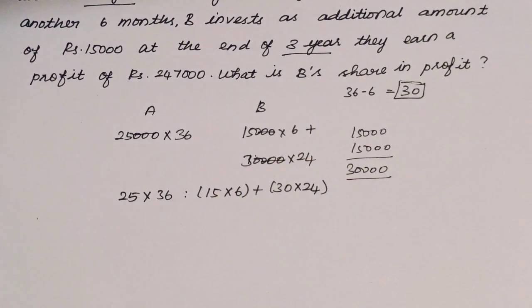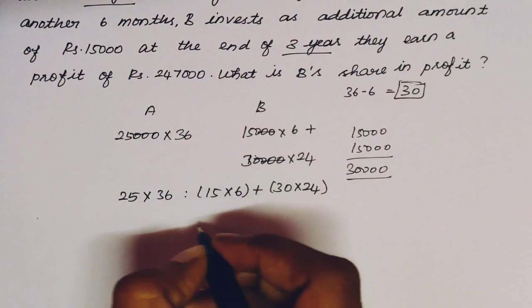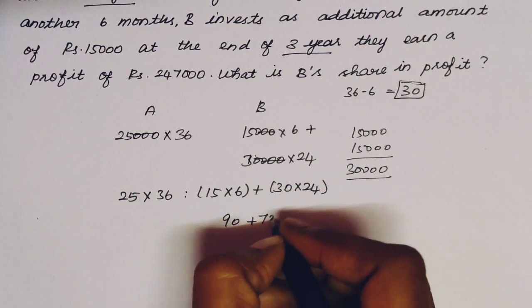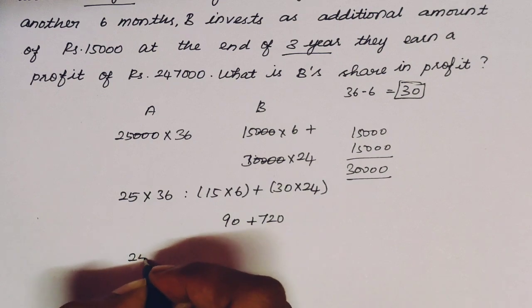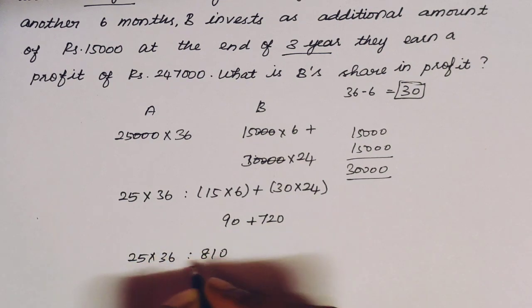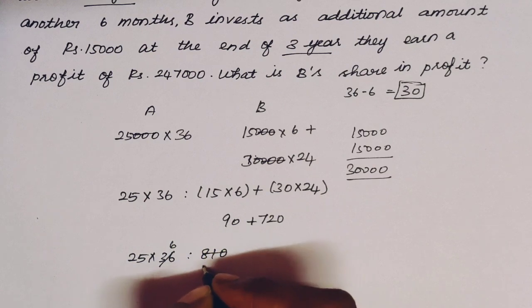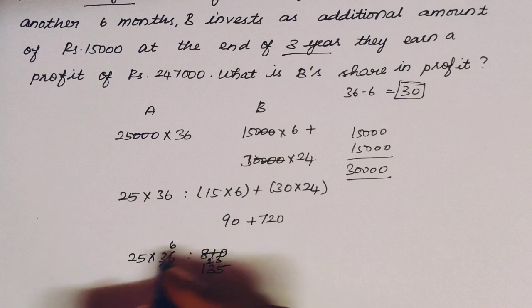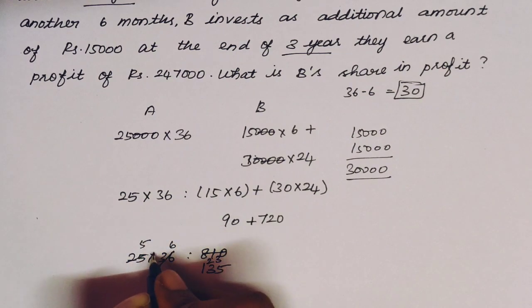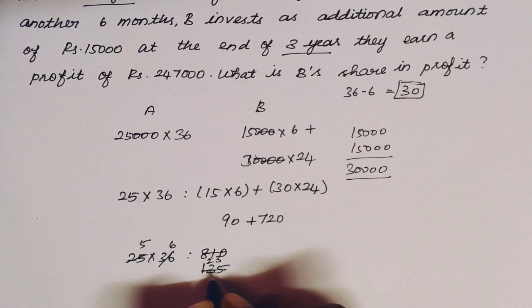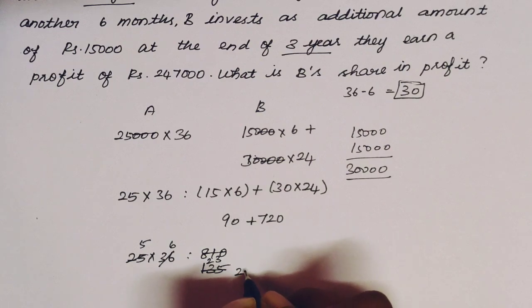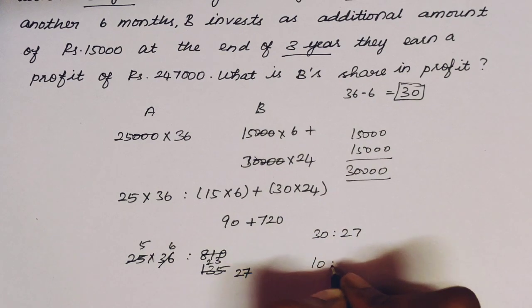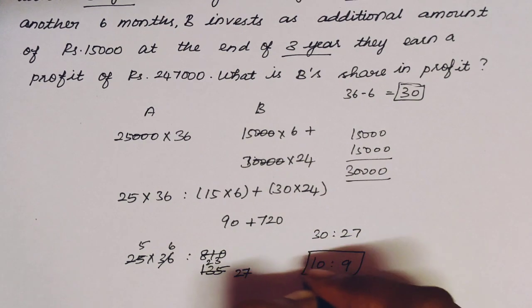The investment-time products are: A = 25 × 36 = 900. B = (15 × 6) + (30 × 24) = 90 + 720 = 810. So the ratio is 900 : 810. Dividing by 6 gives 150 : 135. Dividing by 5 gives 30 : 27. Dividing by 3 gives 10 : 9. The profit ratio is 10 : 9.